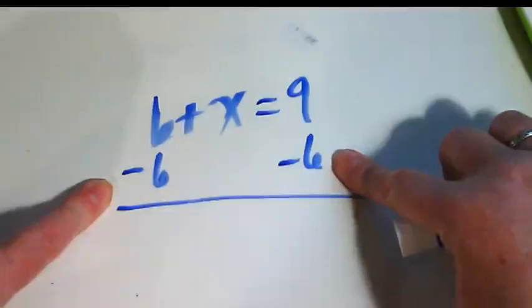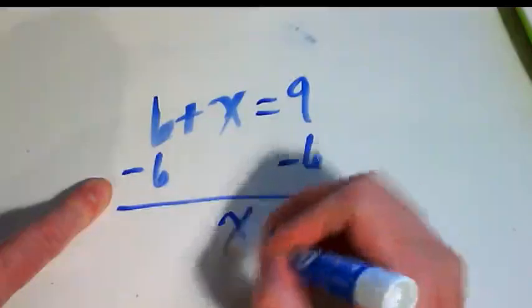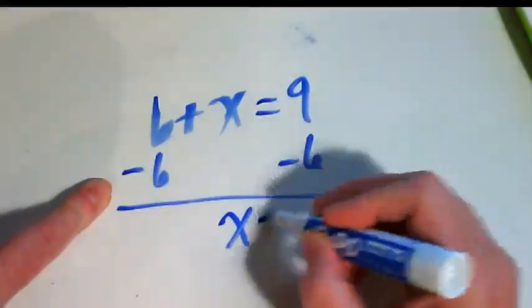I'm taking a negative 6 from both sides. 6 minus 6 is going to be 0, that leaves me with x. 9 minus 6 is equal to 3.